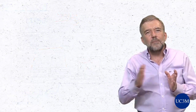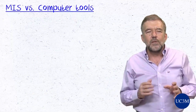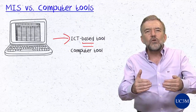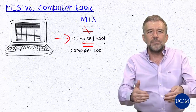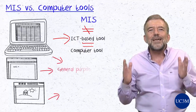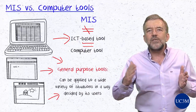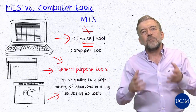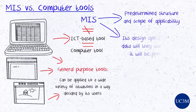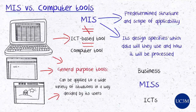A less obvious distinction has to be made with computer tools, such as office tools. If we use a spreadsheet on our personal computer, we are utilizing an ICT-based tool or computer tool. However, it falls short of what we shall call here a management information system. Word processors, spreadsheets, drawing applications, and countless others are examples of general-purpose tools that can be applied to a wide variety of situations in a way decided by the user. Management information systems, however, have a predetermined structure and scope of applicability. Their design specifies which data they will utilize and how it will be processed. Management information systems lie at the frontier between information and communication technologies and business — they represent the application of ICT-based solutions to specific business requirements.